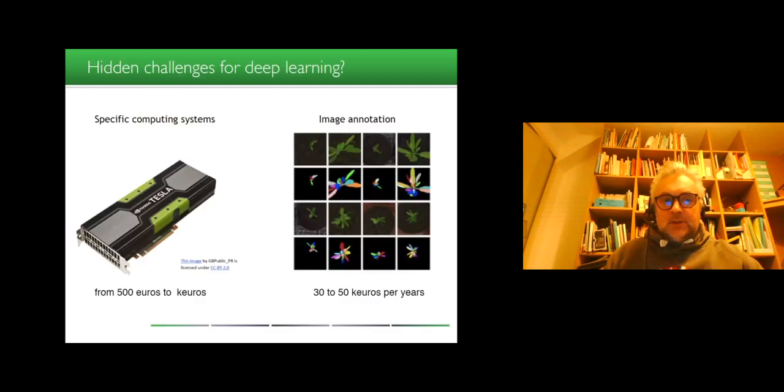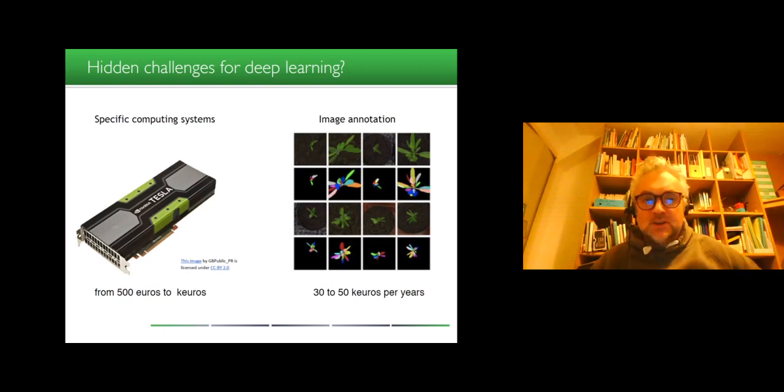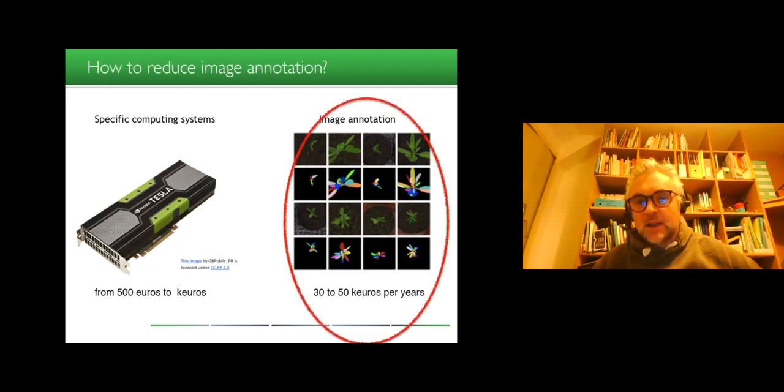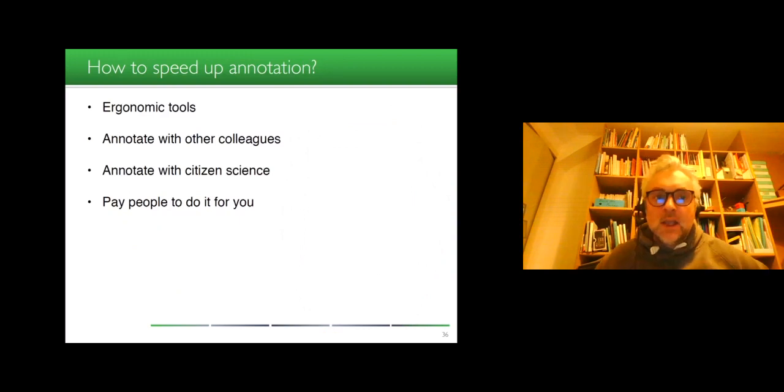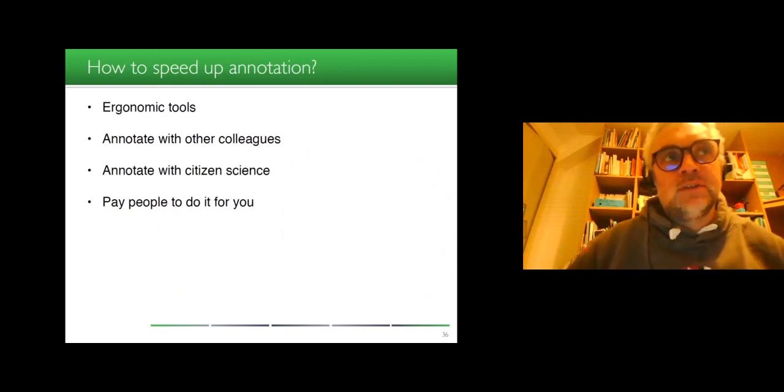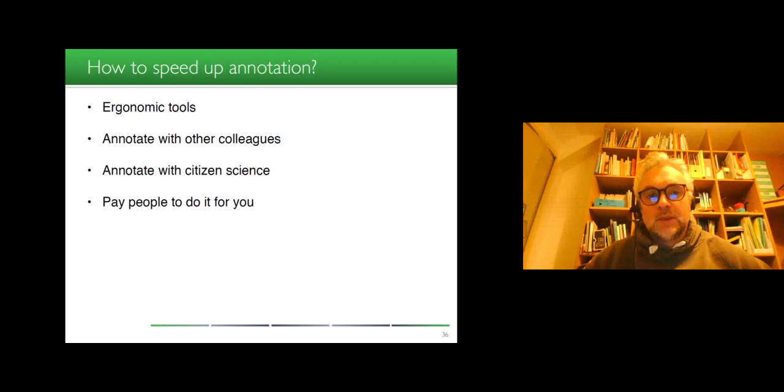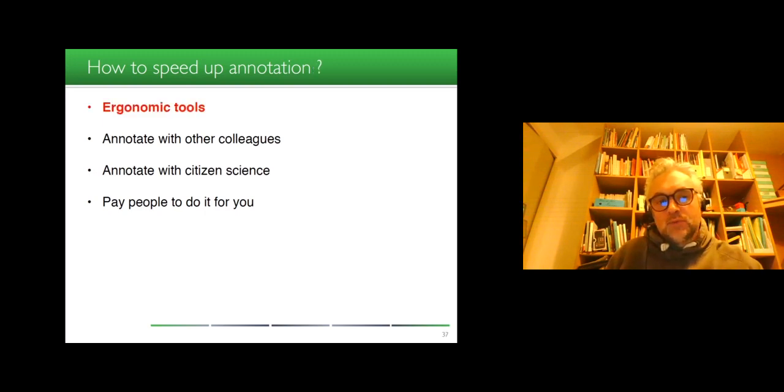So hidden challenges in deep learning. There are actually some hidden costs in deep learning related to image annotation or related to the need of specific computing systems. Let's start with image annotation. Actually, how to speed up image annotation because image annotation can be very time consuming and very costly. So there is a way to accelerate this by annotating with other colleagues, annotate with citizen science or pay people to do it for you. And in our group, we try to develop ergonomic tools so that the annotation is speed up.